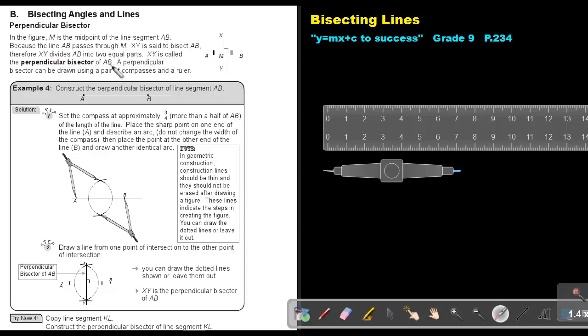A perpendicular bisector can be drawn using a pair of compasses and a ruler. It's perpendicular because it makes a 90 degree angle, and it's a bisector because it bisects the line AB - it divides it into two equal parts.